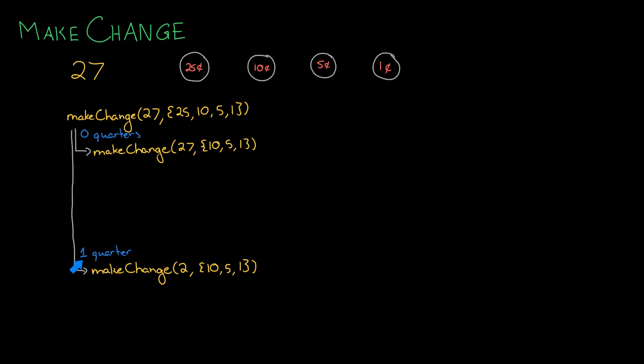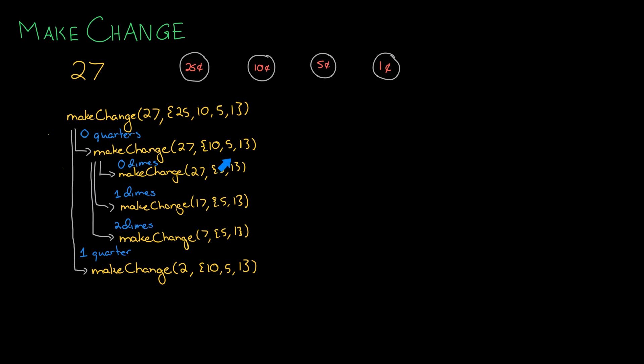If we give out one quarter, then we're just trying to make 2 cents from the remaining options — and obviously there are a whole lot of ways of doing that. Now we just repeat this process. How many ways are there of making 27 cents from dimes, nickels, and pennies? We could give zero dimes, one dime, or two dimes, and similarly for the other sub-problems, though the possibilities are more limited there.